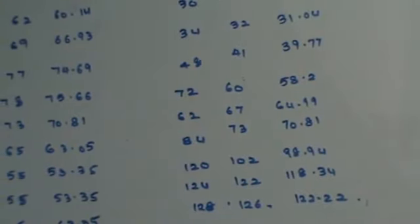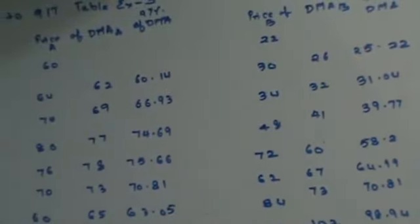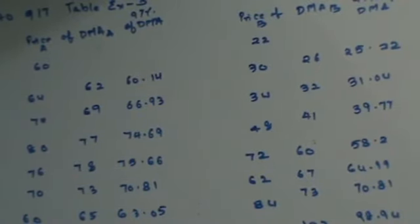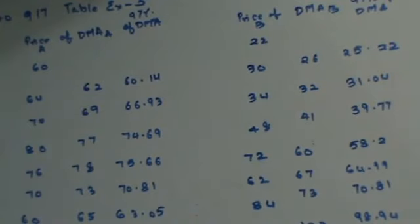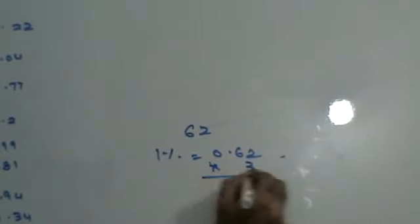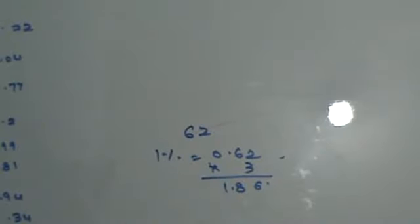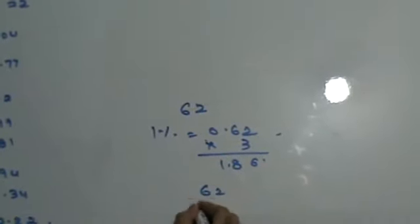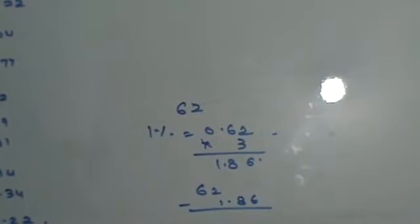How to find 97% without a calculator in the exam hall? Your DMA is 62. 1% of 62 is 0.62. Multiply by 3 to get 1.86. Subtract from the original DMA: 62 minus 1.86 gives you 97% of DMA, which is 60.14.